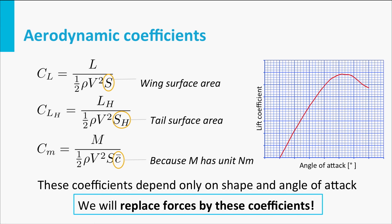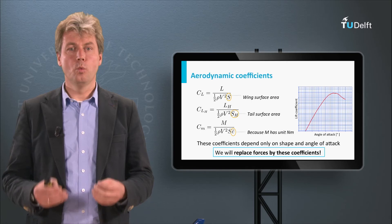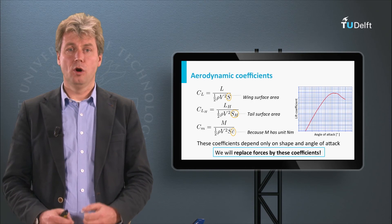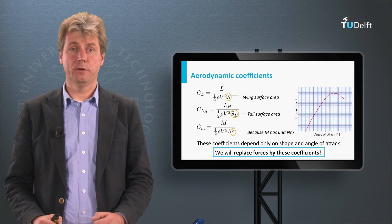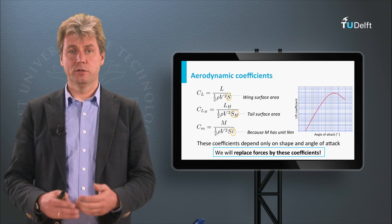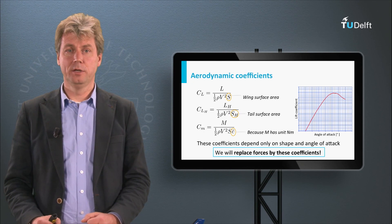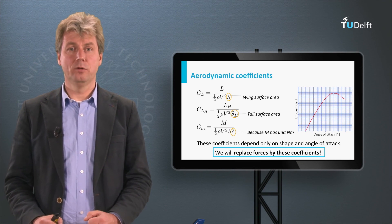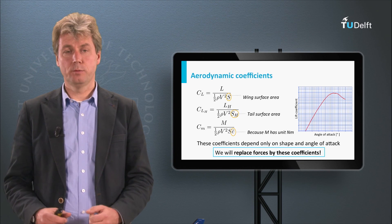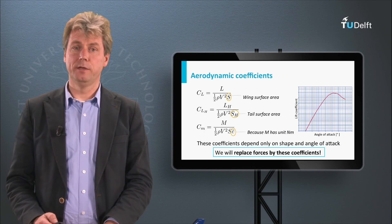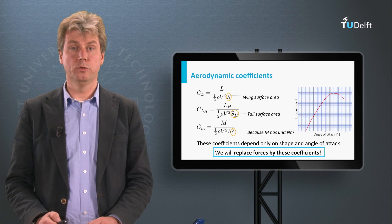So bottom line is that CL, CLH and CM are for us basically forces and moments without dimensions and also without the influence of altitude and speed or surface area. So they are valid for the shape of the airfoil and the current angle of attack. And that is where we will use them, because that is very convenient in the derivation we will do in the next lecture.